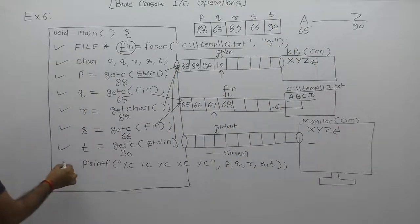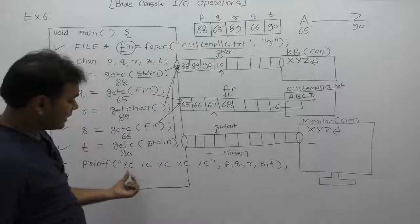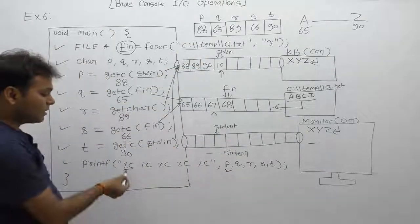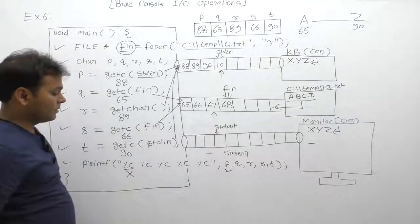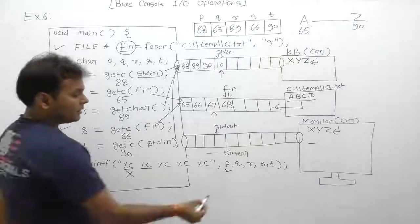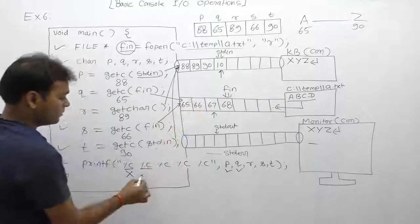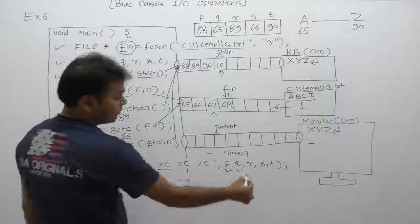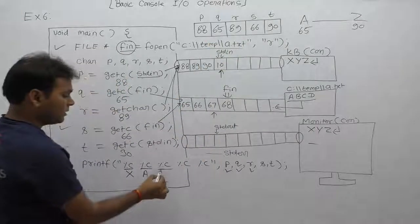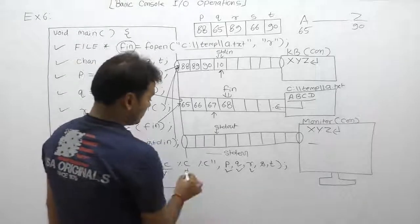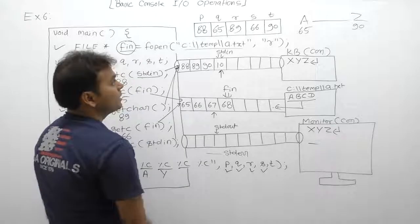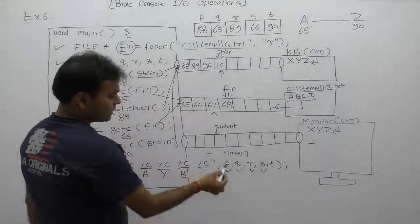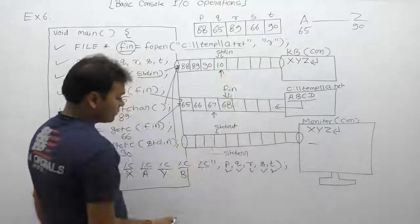Next, just after printf function, percent c for first percent c place, what value? p. p has 88. Therefore equivalent to x, upper x. Therefore equivalent to A. Next one, third percent c place replace with value of R. R value found 89, equivalent to Y, upper Y. Next one, fourth percent c place replace with value of S. S value is 66, equivalent to B. Last case, percent c place replace with value of T. T has 90 store, which is equivalent to Z.